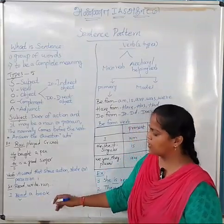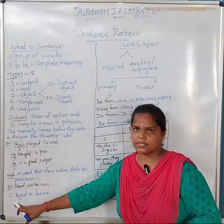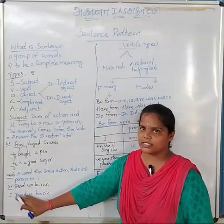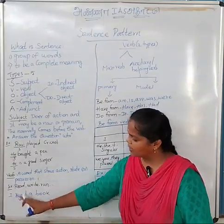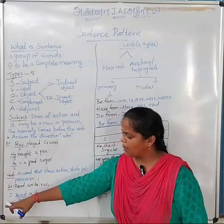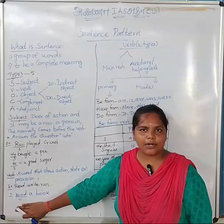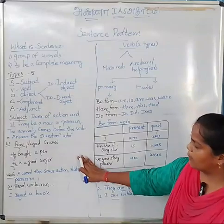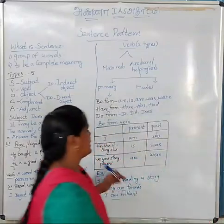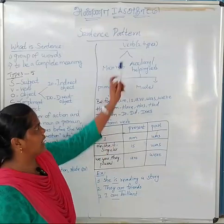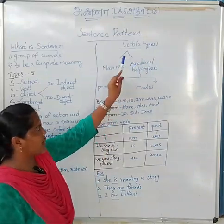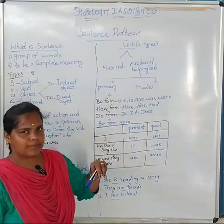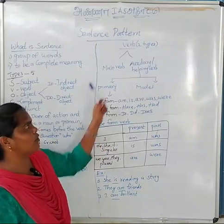For example, 'I read a book.' What is the subject? 'I' — the noun or pronoun. What is the verb? 'Read.' What types of verbs are there? Two types of verbs. From our parts of speech classes, verb has two types.